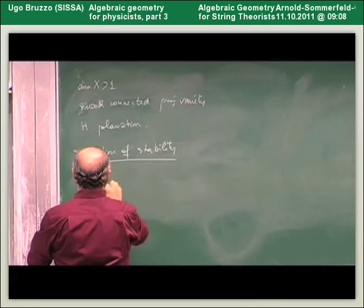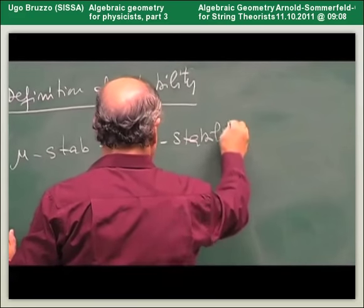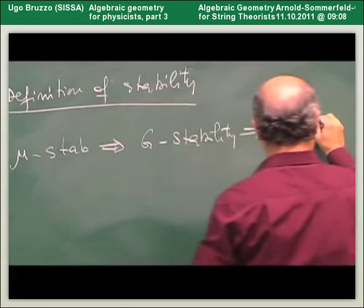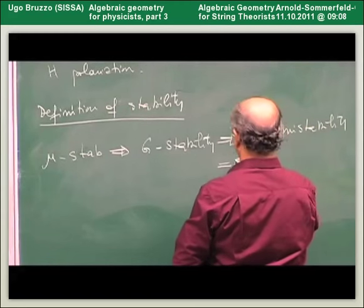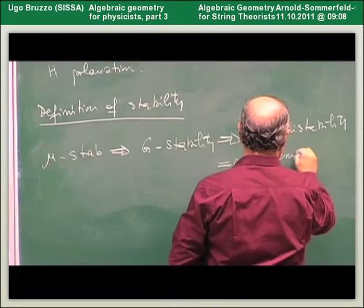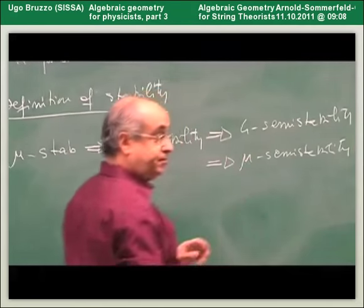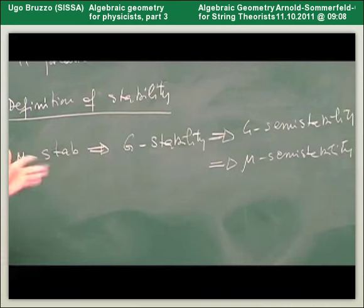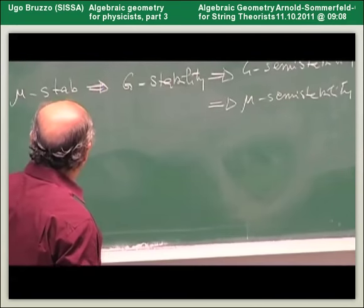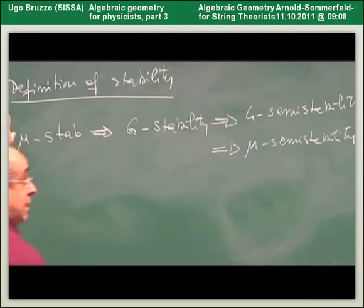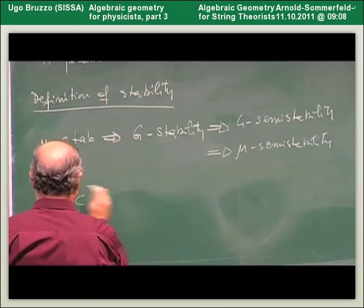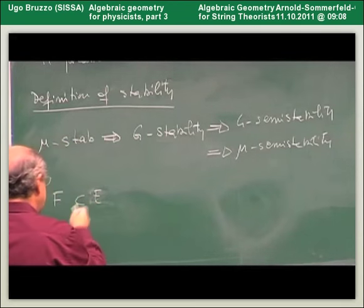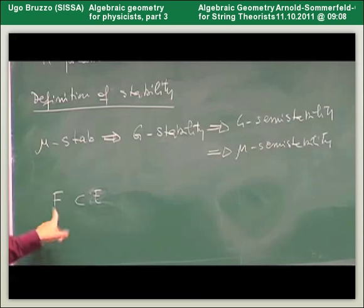In particular, you can prove that mu-stability implies Giesecker stability, which of course implies Giesecker semi-stability, which implies mu-semi-stability. You have this chain of implications, which is easy to check from the numerology of the polynomial. But the real point is that in higher dimensions, when defining stability we check what happens for sub-bundles. In higher dimensions it's not enough to consider sub-objects that are bundles themselves — we need something slightly more general.